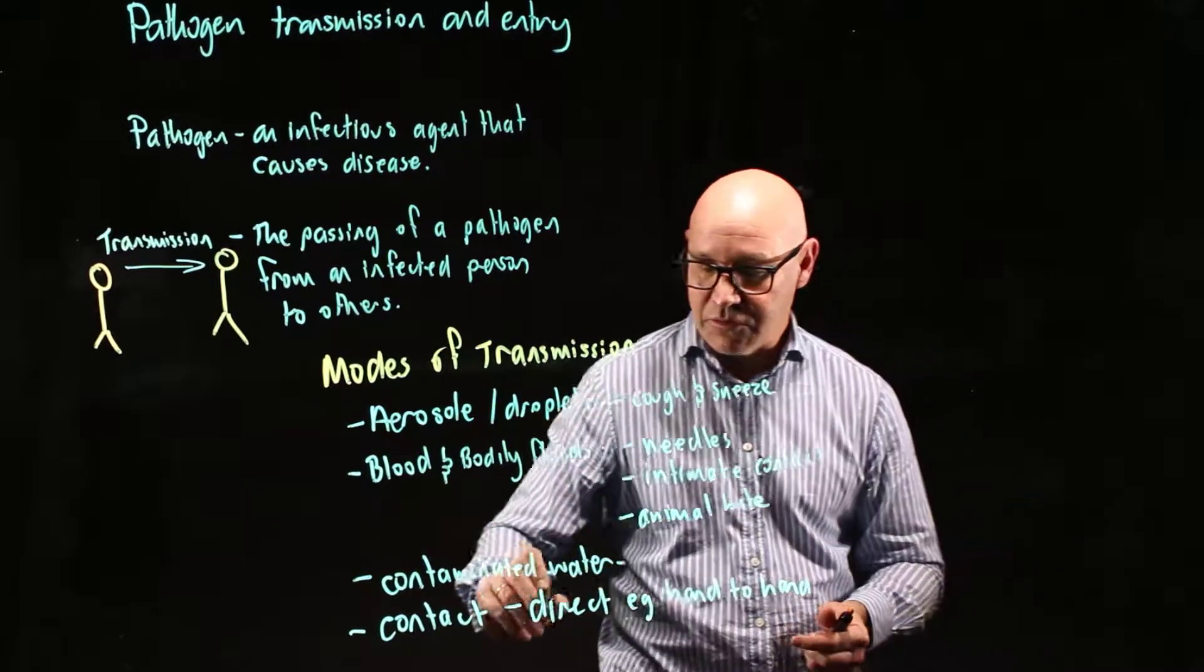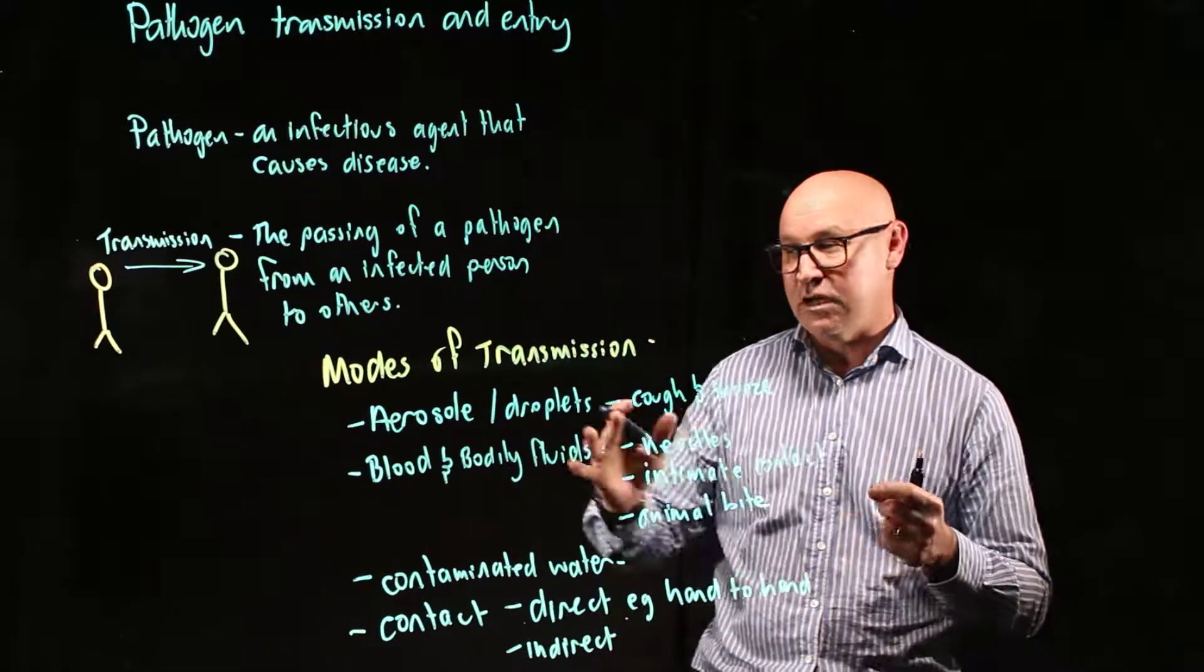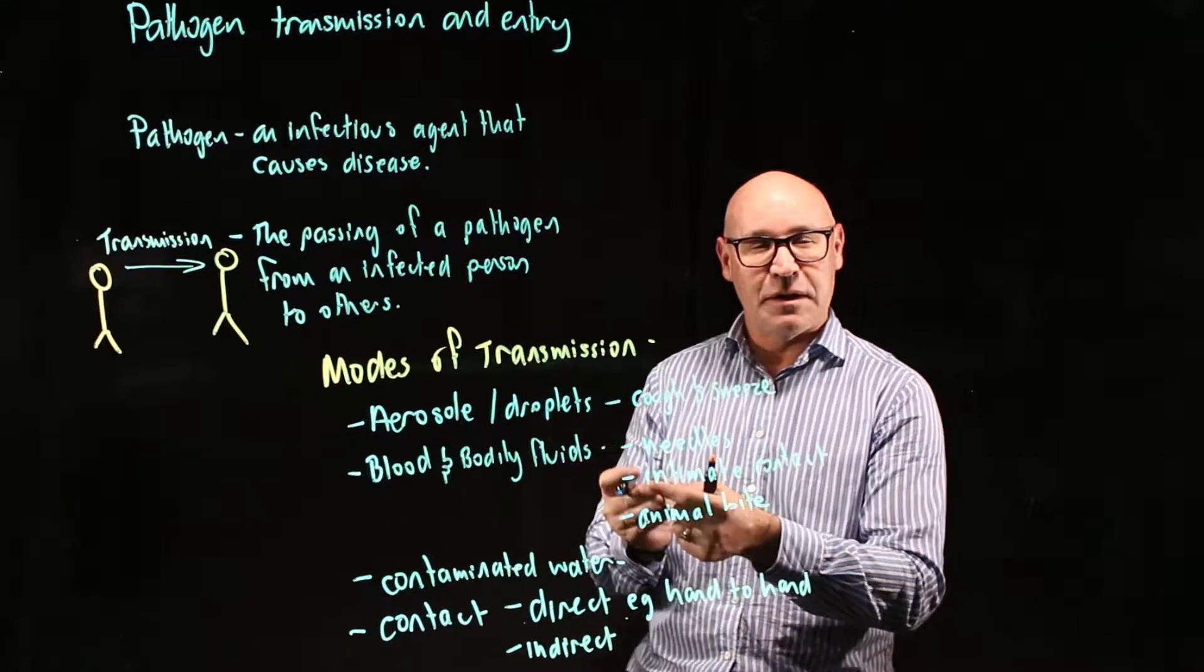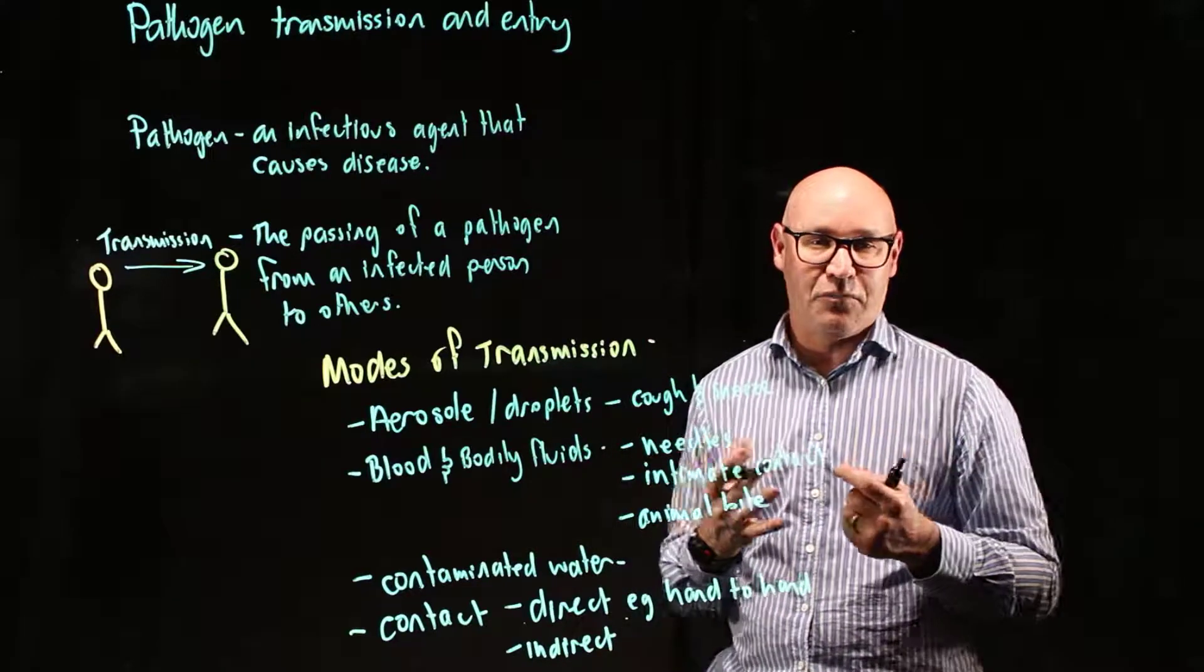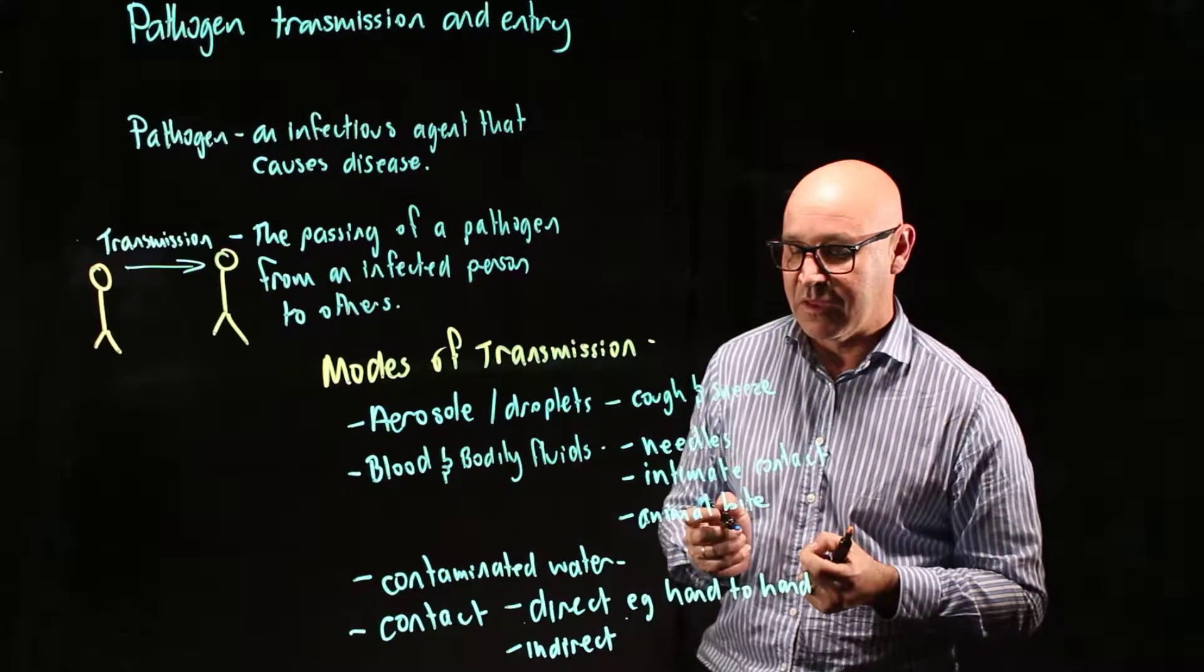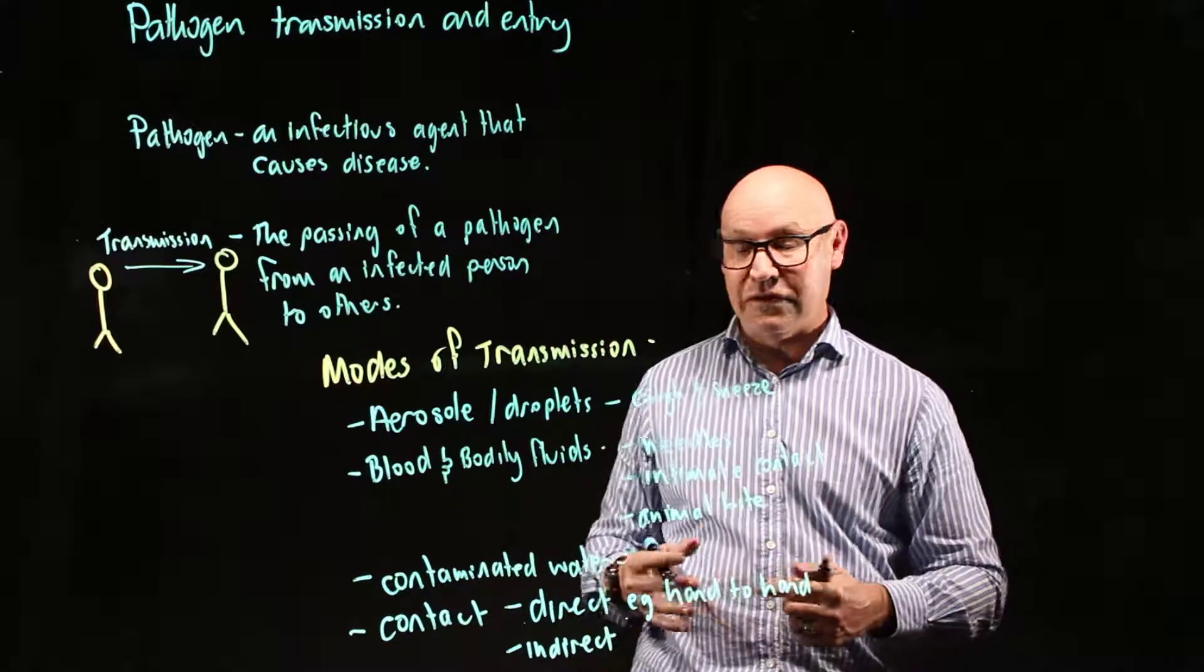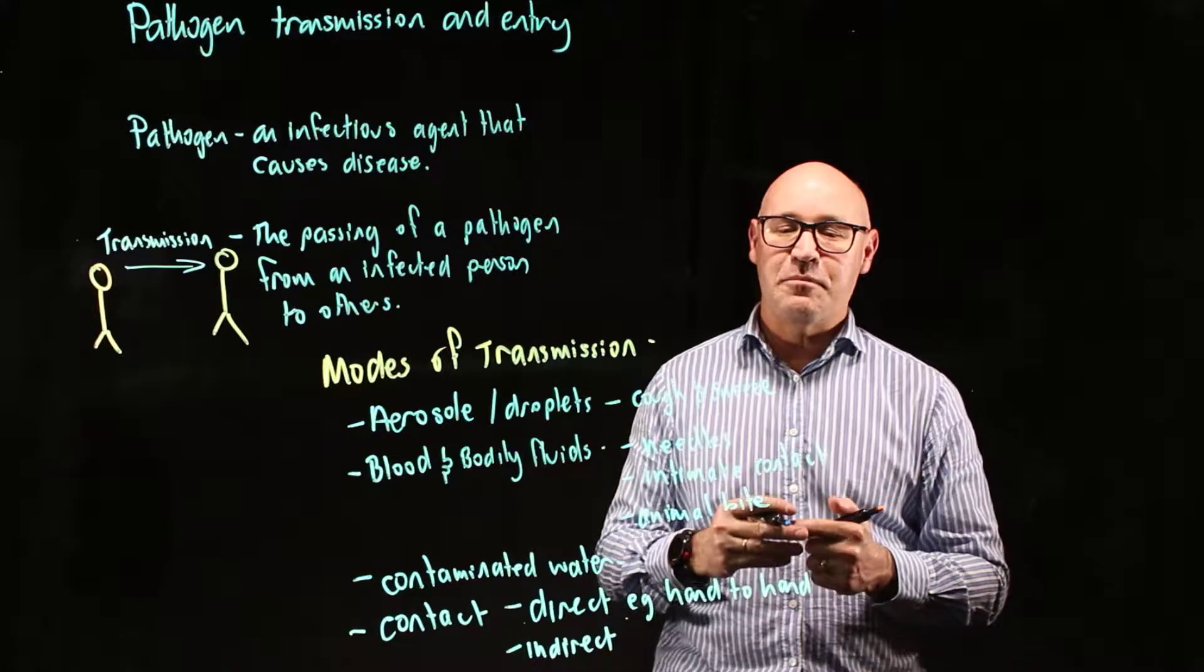Or it could be indirect contact. For example, somebody who is infectious may have touched money, and then you have touched that money and maybe put your hands in your mouth when you were eating a sandwich, that sort of thing. And so another name for that sort of contact is called smear contact, and we're specifically talking about faecal.